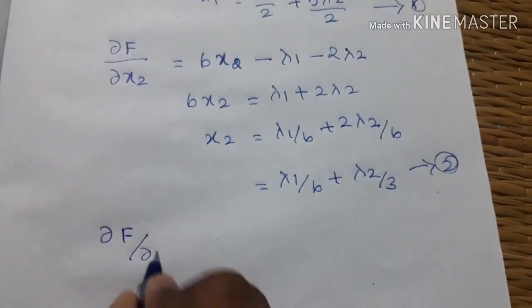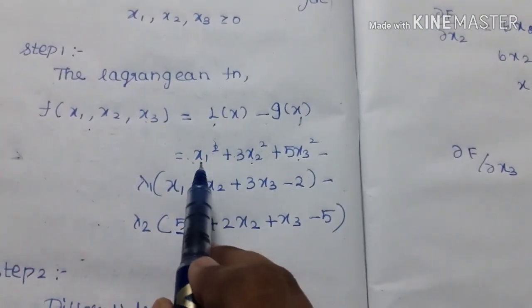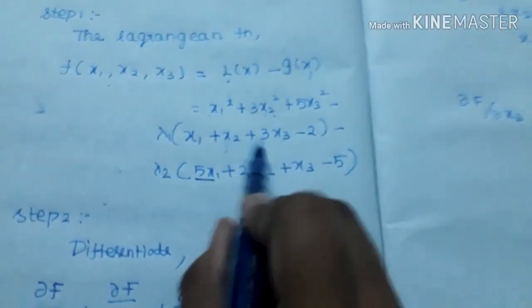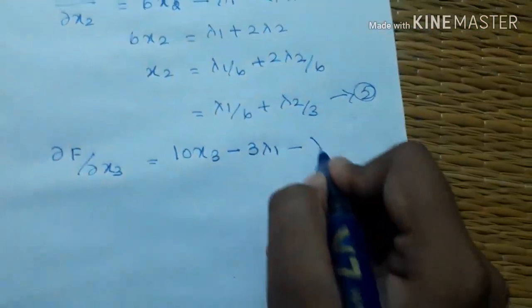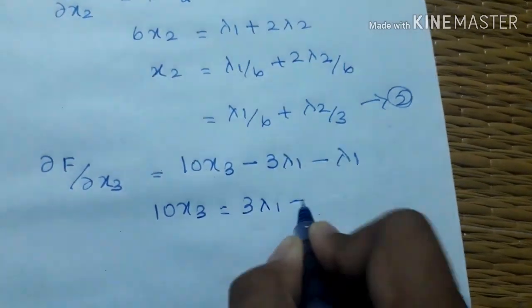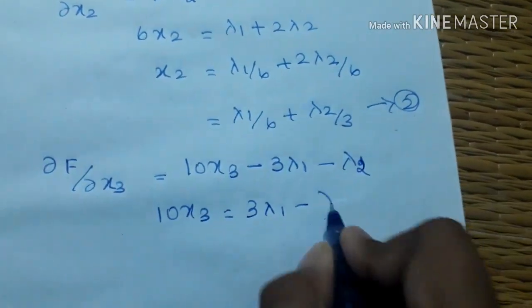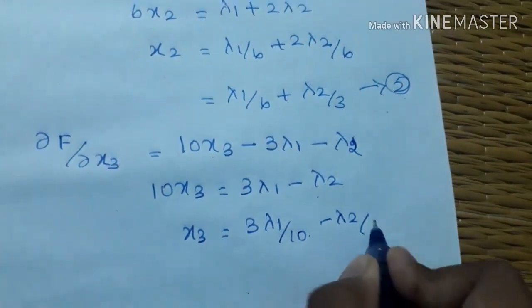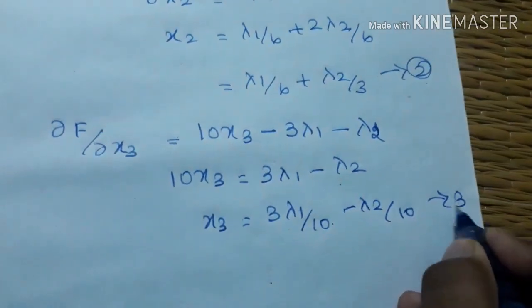Third, differentiate with respect to x3. If x3 is differentiated, this is constant 0. We get 10x3. Minus x3 coefficient is 3, so minus 3 lambda1. This coefficient is 1, so minus lambda2. So x3 is equal to 3 lambda1 by 10 minus lambda2 by 10. This is the third equation.